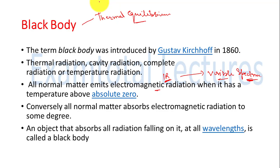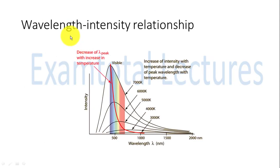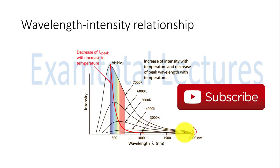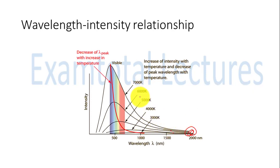What we have studied is the temperature dependence — what radiation will emit out and at which wavelength. What will be the intensity of the black body and what will be the spectral distribution? Since it emits different wavelengths, the wavelength-intensity relationship is important. At a particular temperature, intensity of radiation increases with wavelength, reaches a peak, and then decreases. For example at 30,000 Kelvin the intensity first increases, reaches a maximum, then decreases — but it never becomes zero. There is always some radiation emitted. So there is an increase of intensity with temperature and a decrease of peak wavelength with temperature.